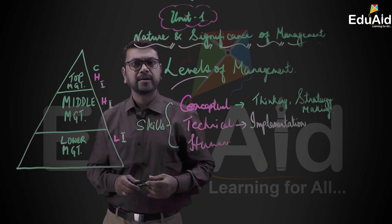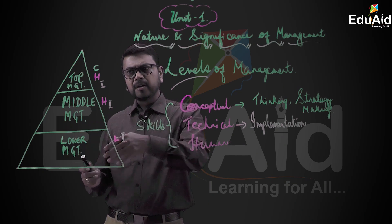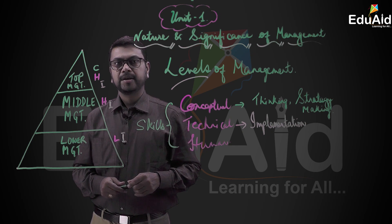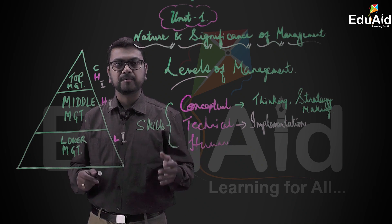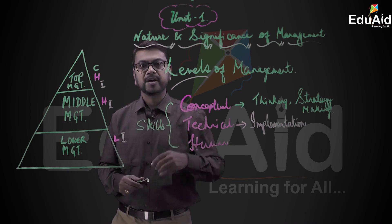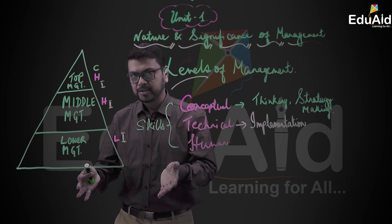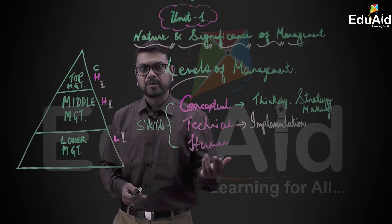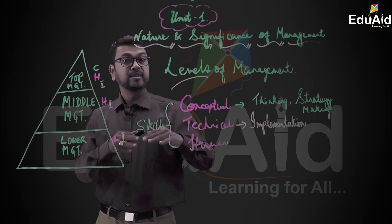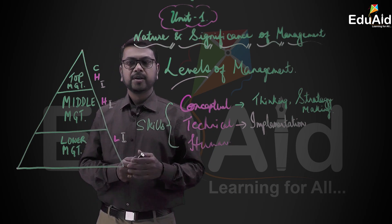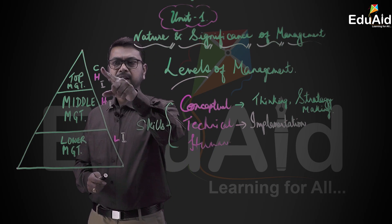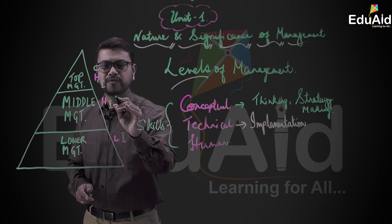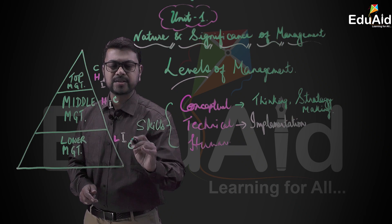Relating this to the COVID pandemic scenario: the top level management, headed by the central government — the prime minister and his team — are developing the strategies. If you talk of the state level, the health minister, the chief minister, and their team of bureaucrats form the top level management. Top level management does more of conceptual skills, middle level does less, and lower level does very less.